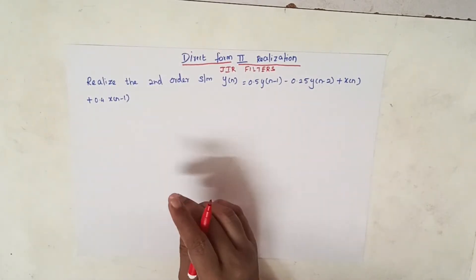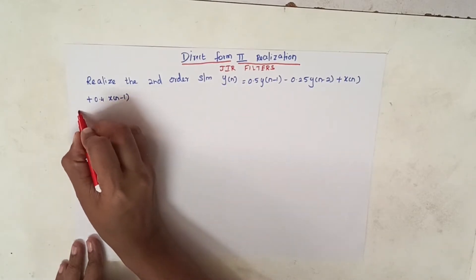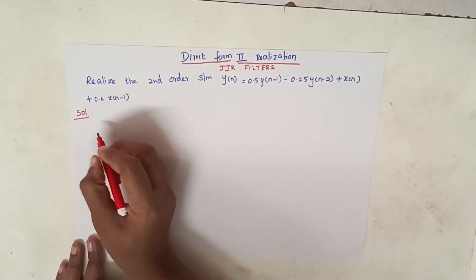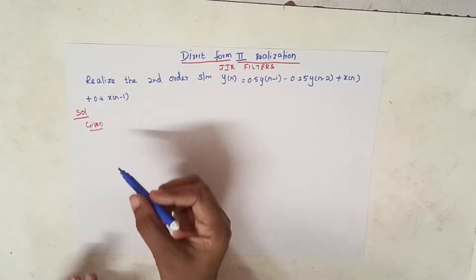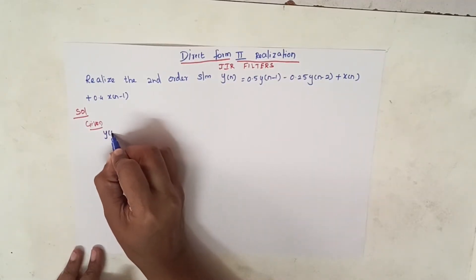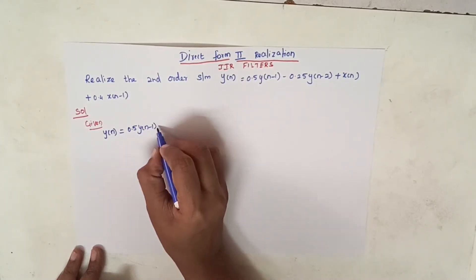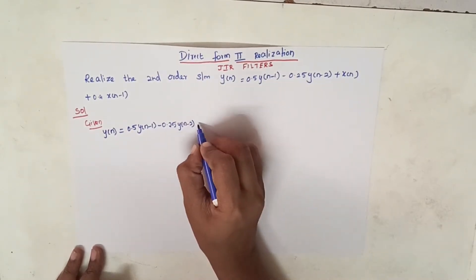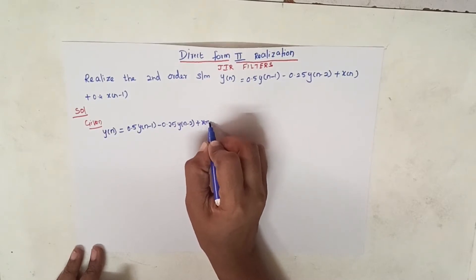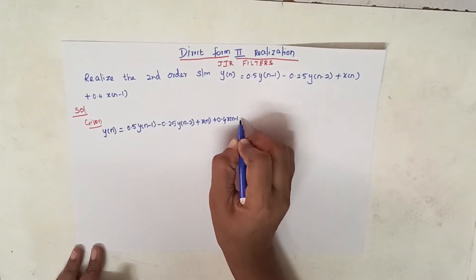Whenever we go for Direct Form 2 realization structure, we require the transfer function H(z). So let us solve this problem. Given: y(n) = 0.5·y(n−1) − 0.25·y(n−2) + x(n) + 0.4·x(n−1).